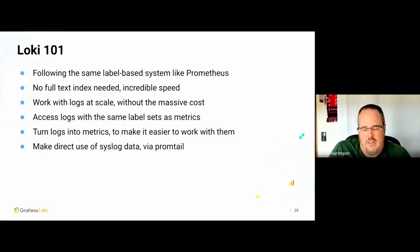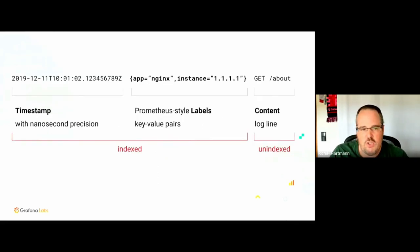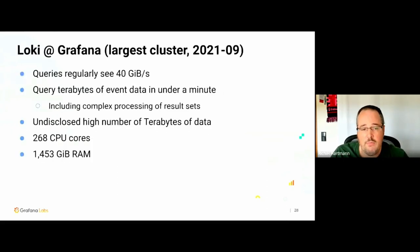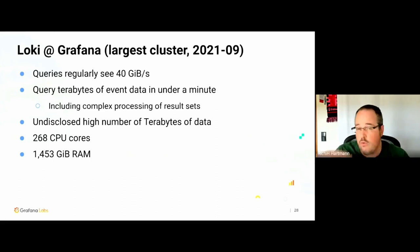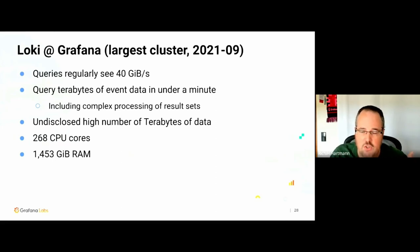You can basically ingest every type of event into Loki. You have a timestamp, the same label set, and then an opaque string which is not indexed — that's part of the magic of Loki. Internally we regularly see 40 gigabytes per second and more in query speed. We query terabytes of event data in under a minute and do complex analysis on those result sets. The cost is 270 CPU cores and 1.5 terabytes of RAM — which for this amount of data, and the constant ingestion and querying, is pretty decent.